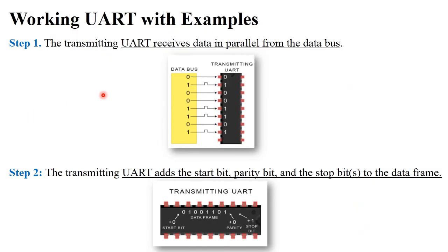Now let's take one example. The task is for the microcontroller to send information to the GPS module. Step one: the microcontroller sends the data 0,1,0,0,1,1,0,1 to UART1 through the data bus in parallel mode. Step two: UART1 sets up this information in the form of a packet. UART1 adds a start bit (always logic 0), parity bit, and stop bit. The parity bit is 0 because there are four ones in the data frame — an even number — so even parity is set. The stop bit is logic 1.